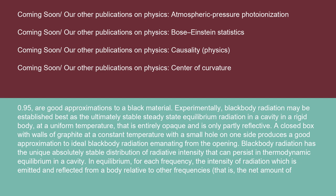Experimentally, black body radiation may be established best as the ultimately stable steady-state equilibrium radiation in a cavity in a rigid body at a uniform temperature that is entirely opaque and only partly reflective. A closed box with walls of graphite at a constant temperature with a small hole on one side produces a good approximation to ideal black body radiation emanating from the opening.